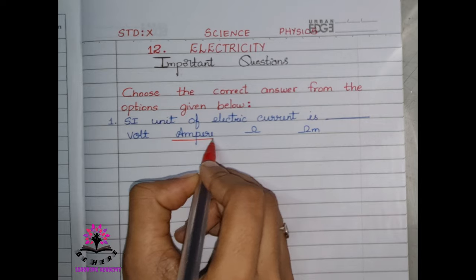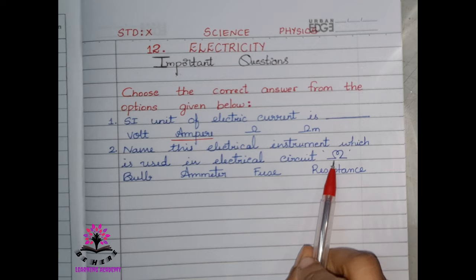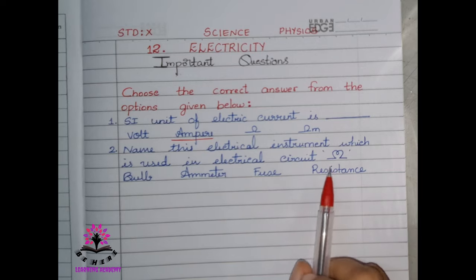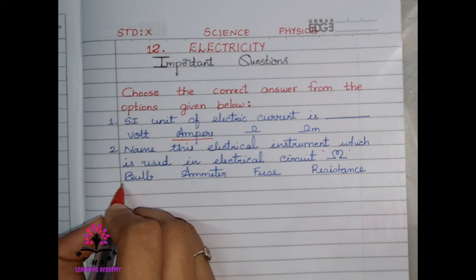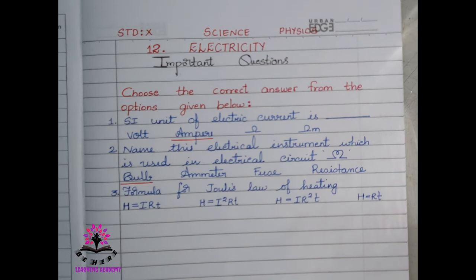Second question: name this electrical instrument which is used in an electrical circuit. That is the representation of an electric bulb. The answer is electric bulb. Let us move on to the next question.